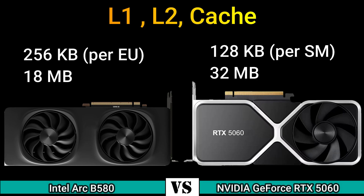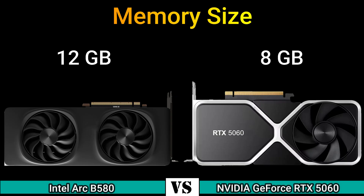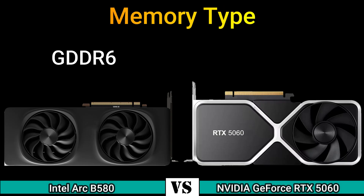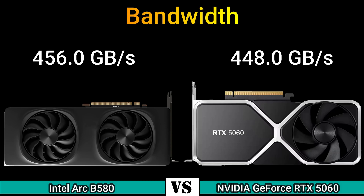Next, memory: memory size 12 GB and 8 GB. Memory type GDDR6 and GDDR7. Memory bus 192-bit and 128-bit. Bandwidth: 456.0 GB/s and 448.0 GB/s.